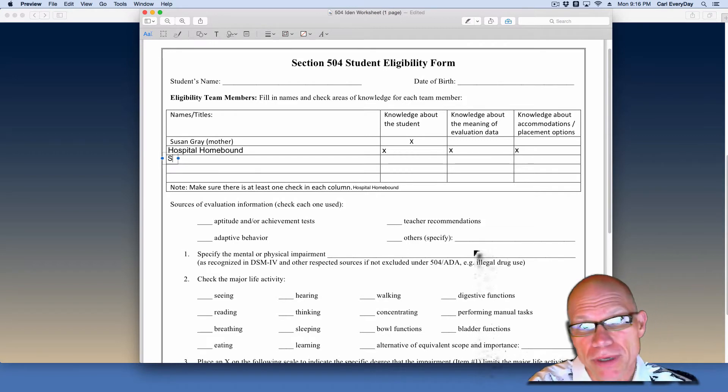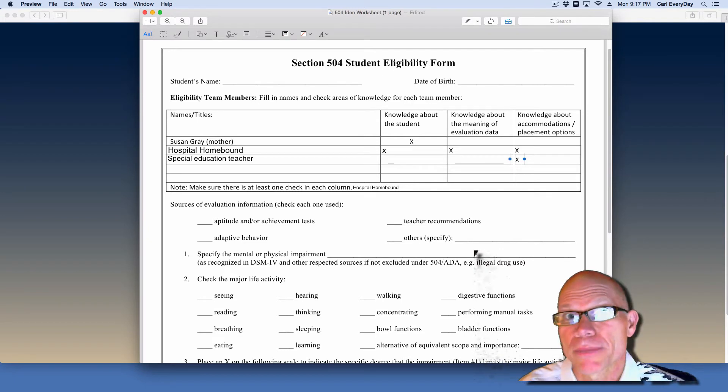Who else should be there? Well a special education teacher, in this case because they are the 504 coordinator, so they are going to have some knowledge of accommodations and placement options. And they probably don't know the student very well because James has not been in special education services. But they may be able to evaluate some of the data.